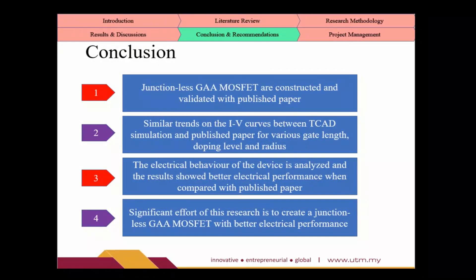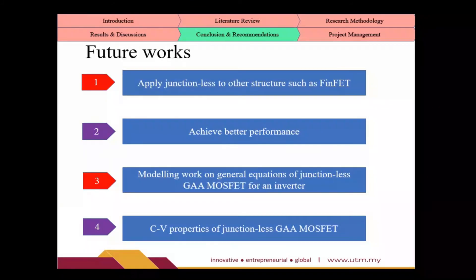In conclusion, the significant effort of this research is to create a junctionless GA MOSFET with better electrical performance. Low threshold voltage, high current ratio, better SS, and low DIBL will be obtained, and the objectives of this research will be achieved. Future work is to apply junctionless technology to other structures, achieve better performance, do modeling work on a general equation, and analyze CV properties of junctionless GA MOSFET.